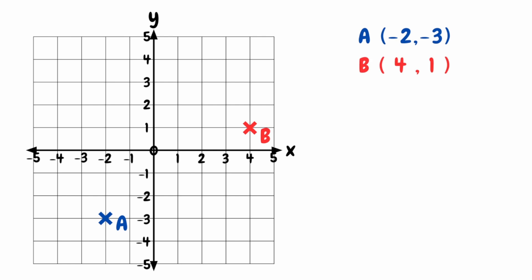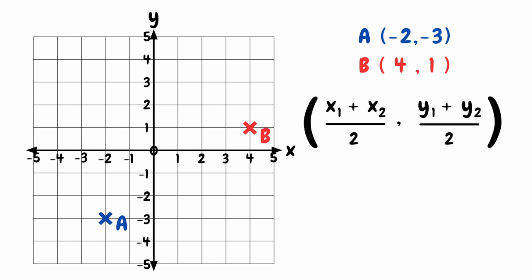To find the midpoint between these two points, we can use our midpoint formula. We can find our x-coordinate of our midpoint by doing x1 plus x2, and then dividing the result of that by 2. And we can find the y-coordinate of the midpoint by doing y1 plus y2, and then dividing that by 2.